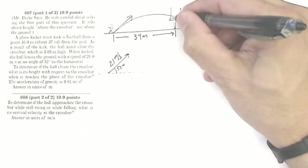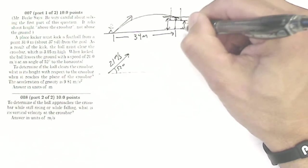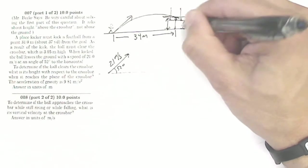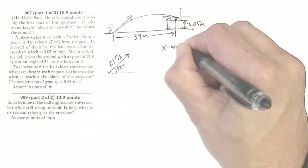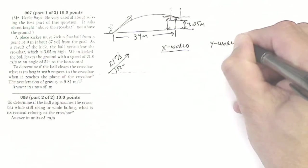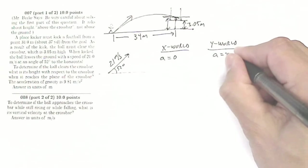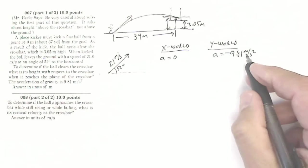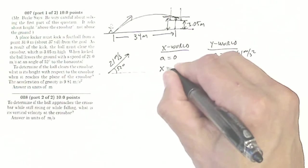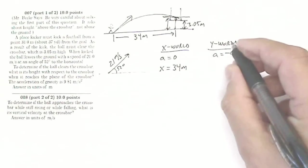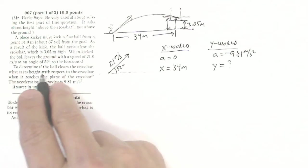To get the height above the crossbar, I need the total height when the ball arrives, and then subtract 3.05 meters. I'll set aside that 3.05 for a second and set up an x-world and a y-world. In the x-world, acceleration is zero. In the y-world, acceleration is negative 9.81 meters per second squared. In the x-world, the football travels 34 meters, so displacement is 34 meters. In the y-world, I'm looking for the height, which I'll use with the 3.05 to find the height above the crossbar.